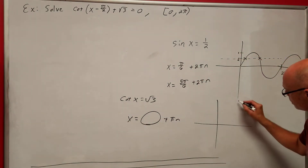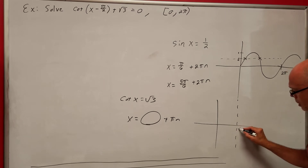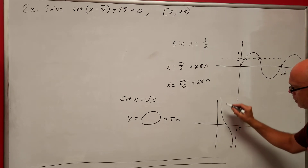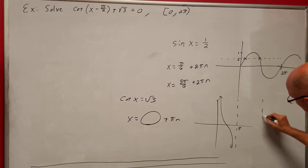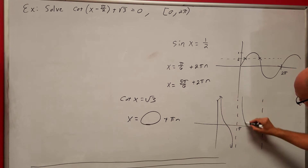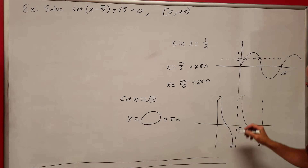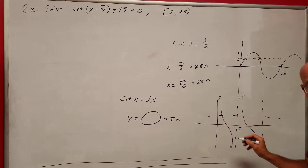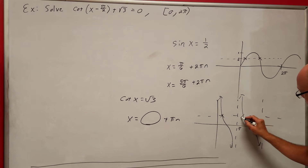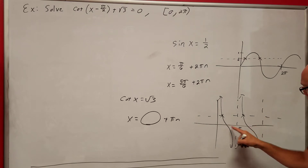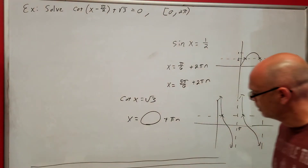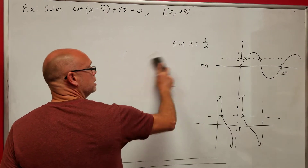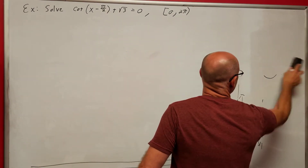What does your cotangent function look like? Here's π — it repeats every π. So when is your cotangent function going to give you values? Every π. We're going to add plus πn with the cotangent and tangent.